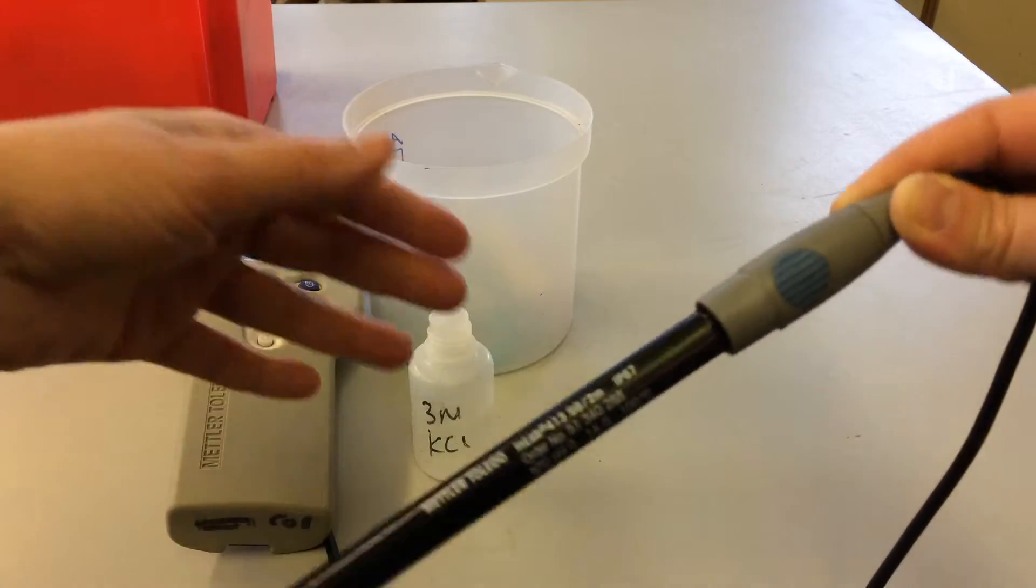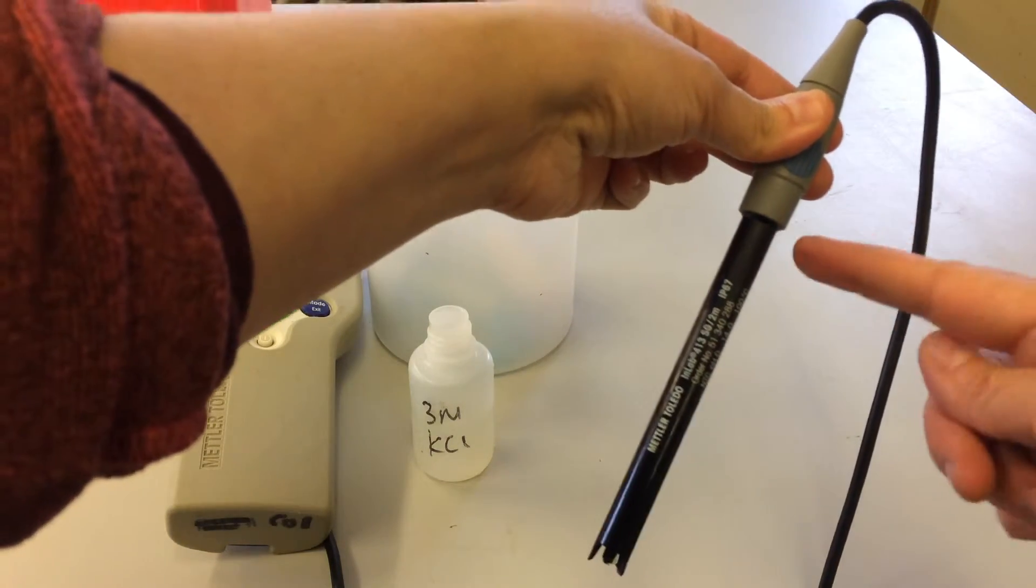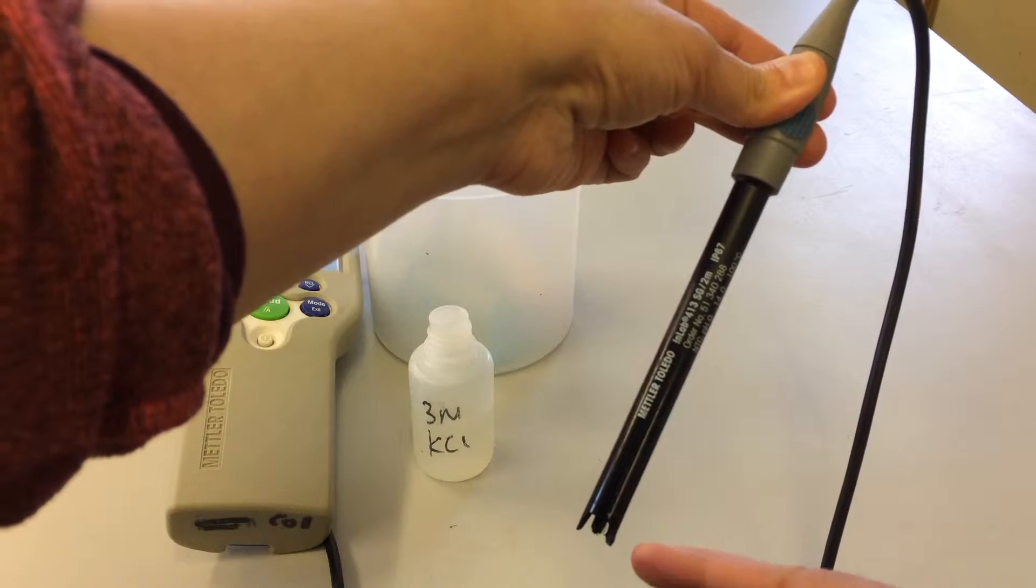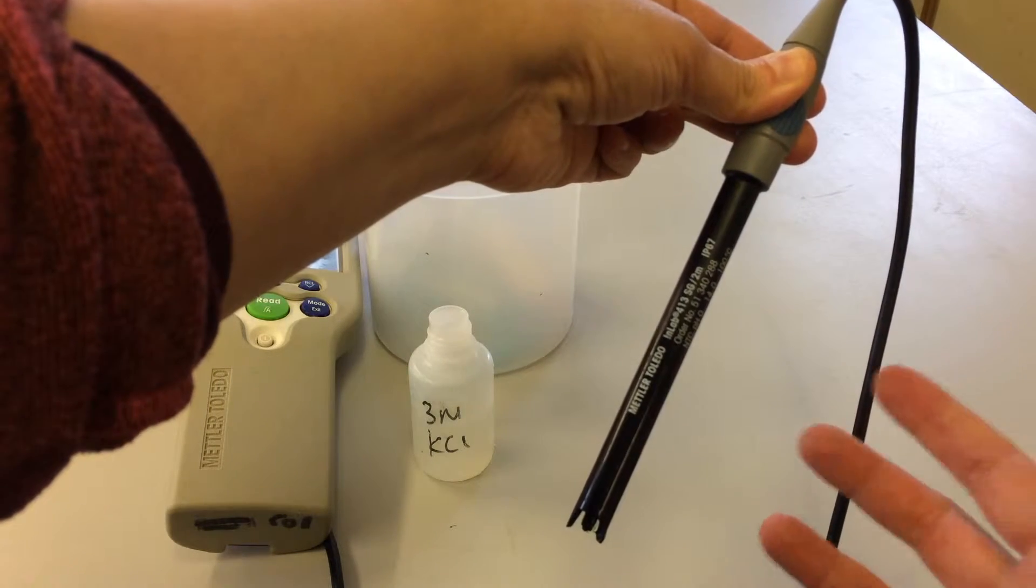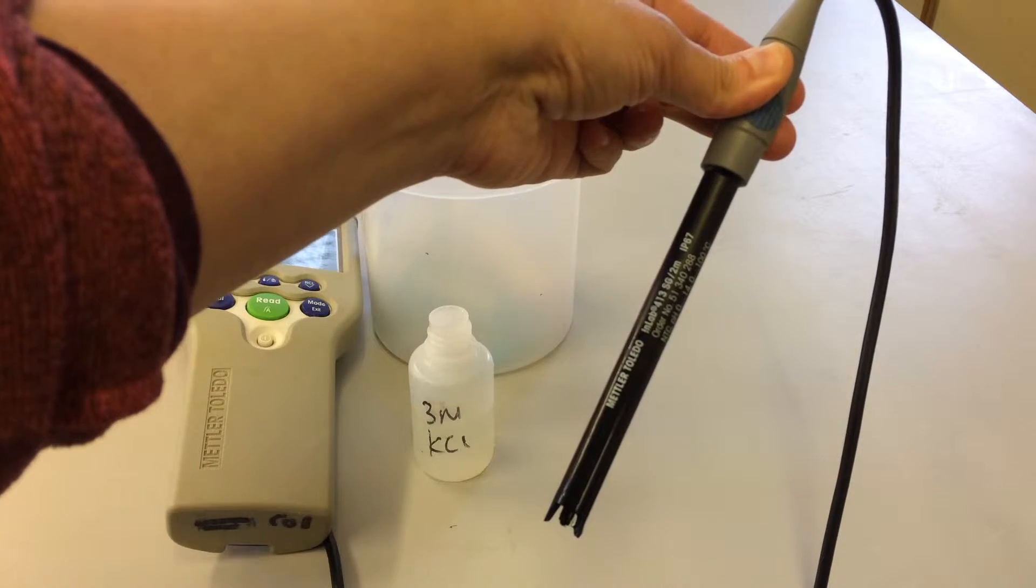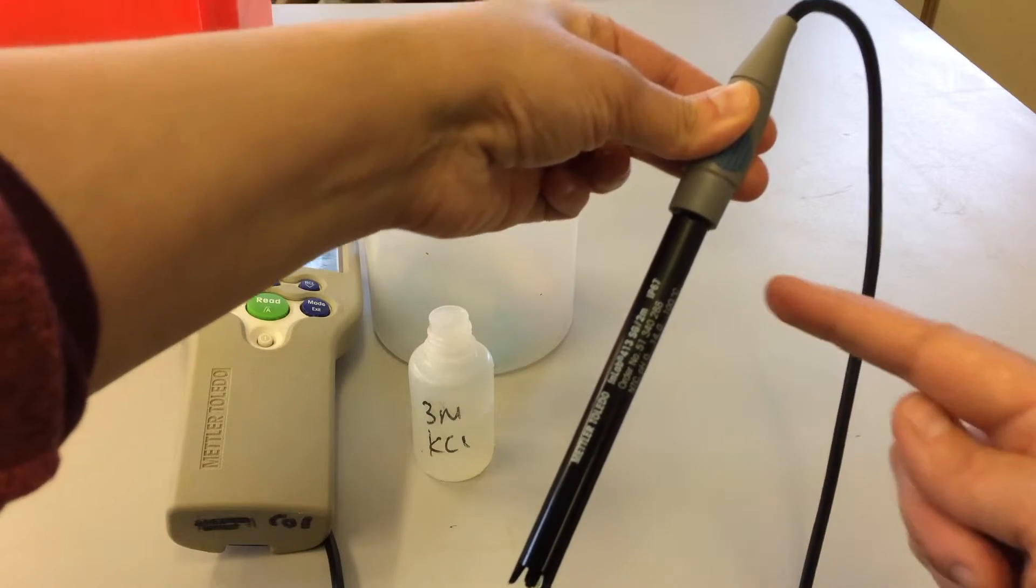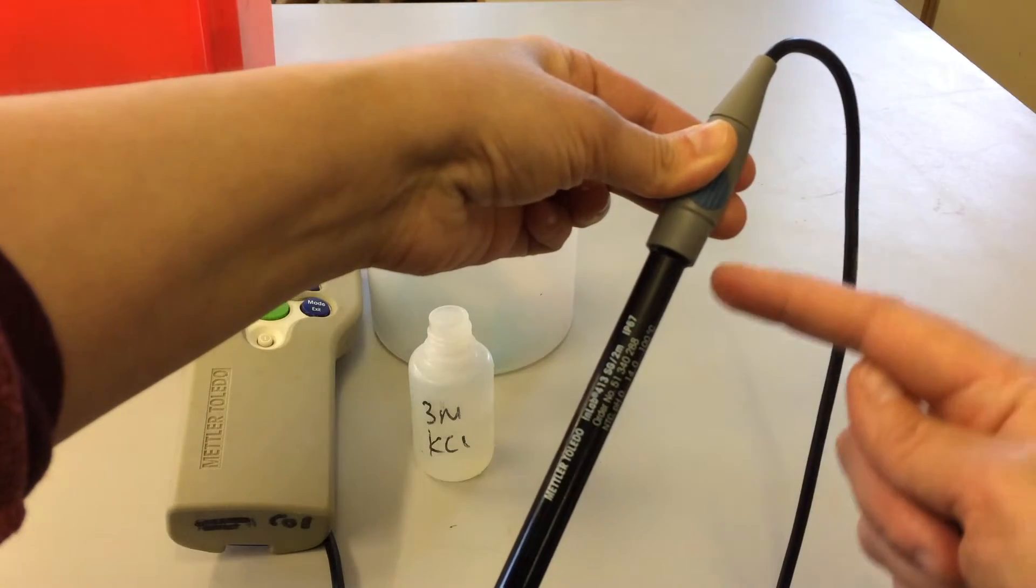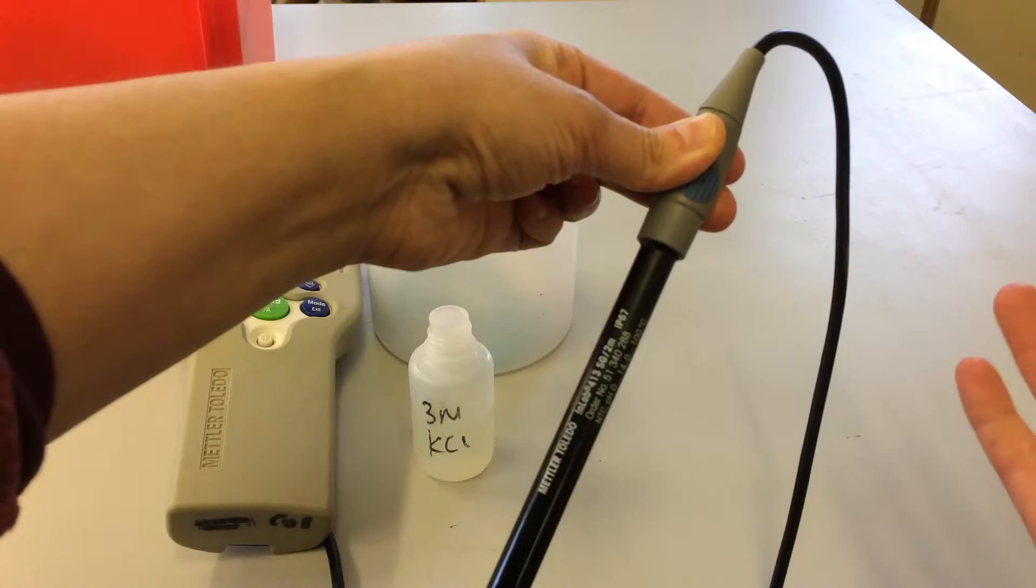Another thing to bear in mind with this probe is that it's not entirely waterproof. This section is, so this is the section that you will be putting into your sample or your experimental tank to measure the pH, say you're doing for example ocean acidification experiments. But this section here, this gray section, is not waterproof, so you must not submerge this underwater otherwise you'll break it.